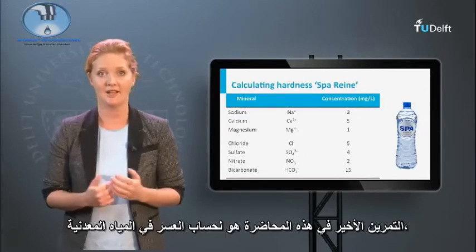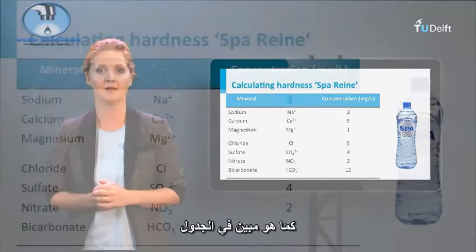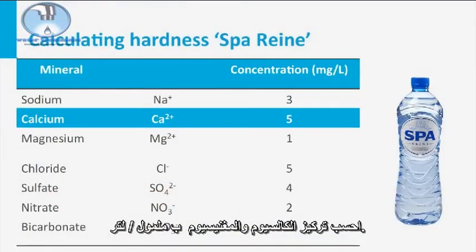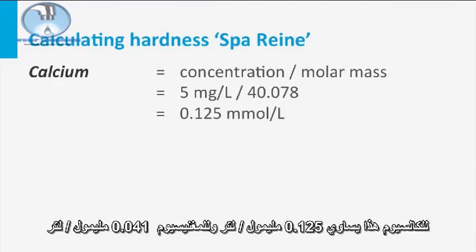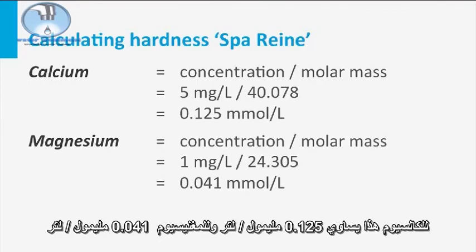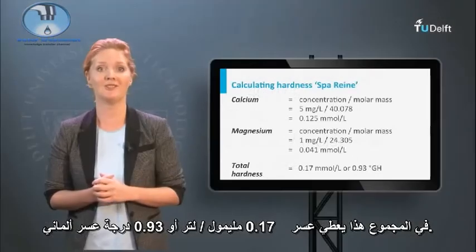The last exercise of this lecture is to calculate the hardness of mineral water, as depicted in the table. Take the calcium concentration and magnesium concentration and calculate the concentration in millimoles per liter. For calcium this equals 0.125 millimoles per liter, and for magnesium 0.041 millimoles per liter. In total this amounts to a hardness of 0.17 millimoles per liter, or 0.93 degrees German hardness.